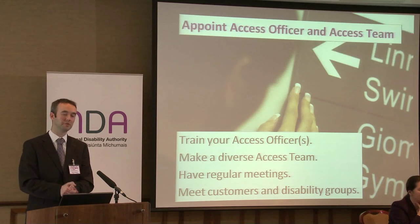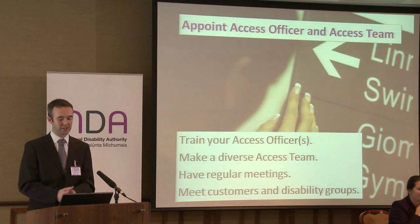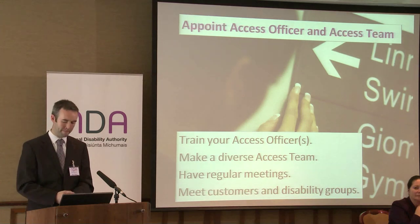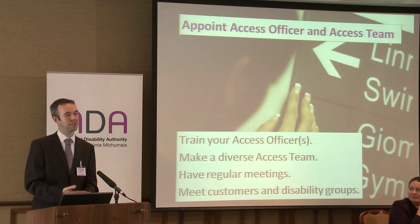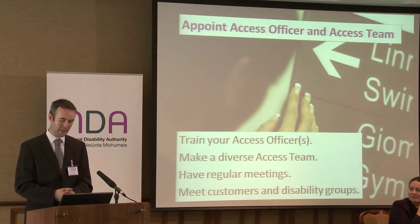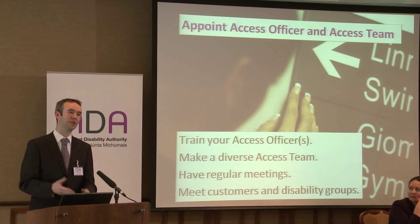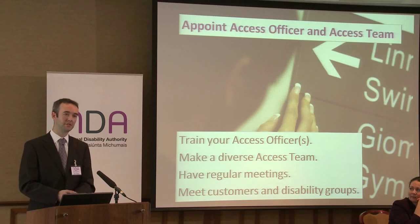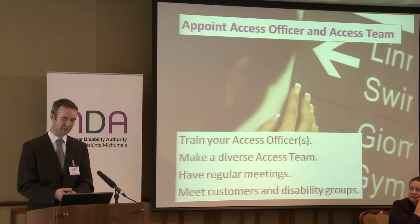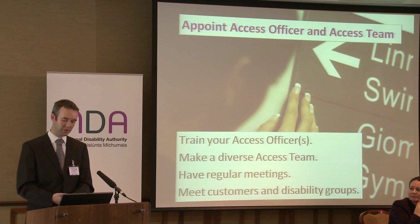We've heard from two very successful access officers today who've done great work. It's great to train up your access officer — they should know the information on this website. You can also have a very diverse access team with as many different levels of seniority and people from as many different departments as possible. This means you can share knowledge across your organisation. It's good to have regular meetings — ideally monthly or every second month. What's great then is if you can meet your customers and disability groups to find out what's going well, what's not, and where you need to focus your limited resources.